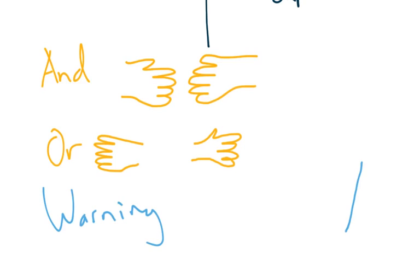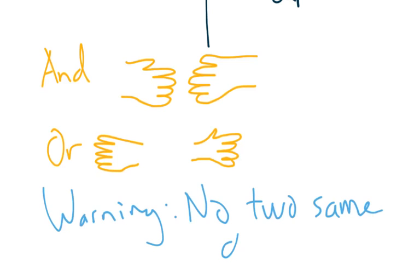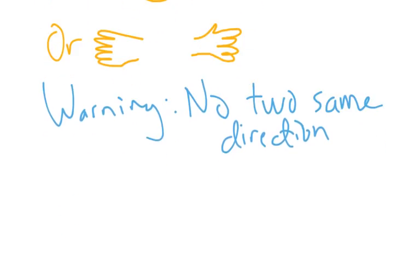There are no two same-direction inequalities in a valid compound inequality. So if you're graphing and solving and you end up with both arrows pointing the same direction, you made a mistake somewhere and one of them should be pointing the other direction.